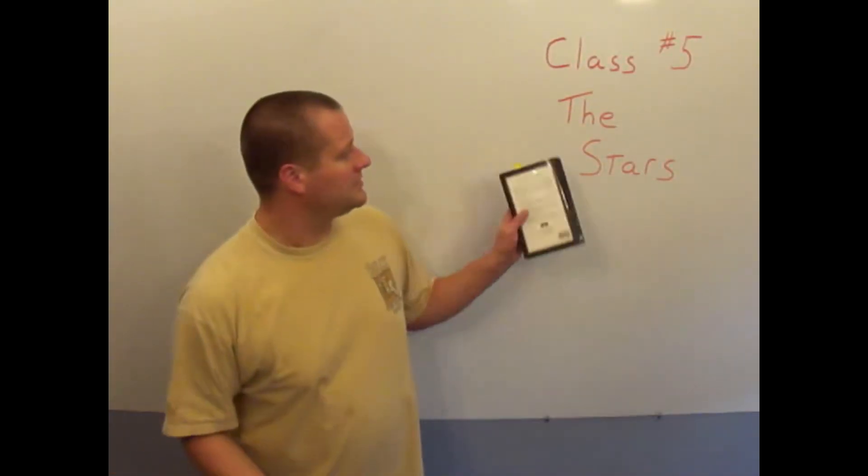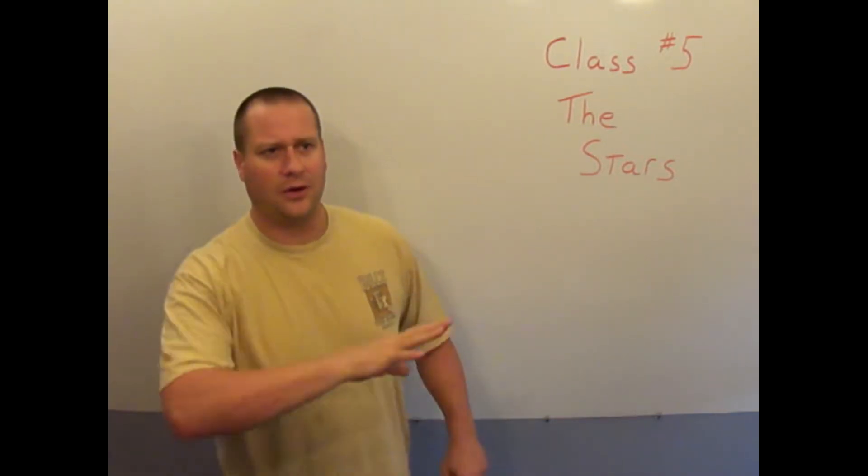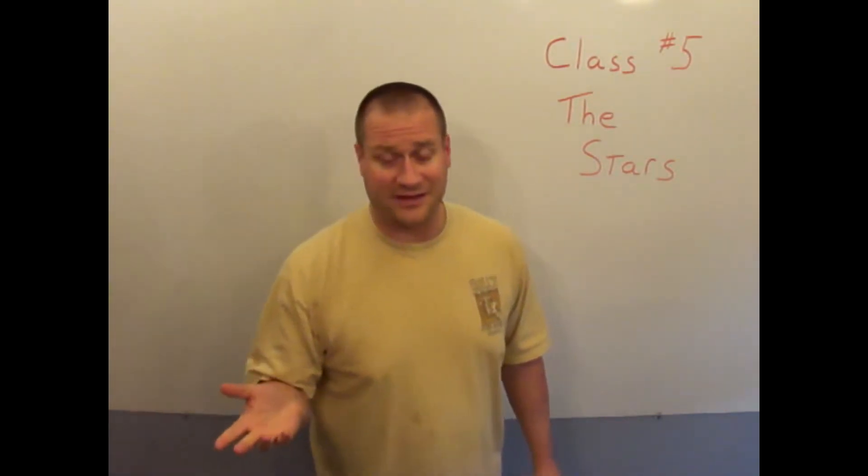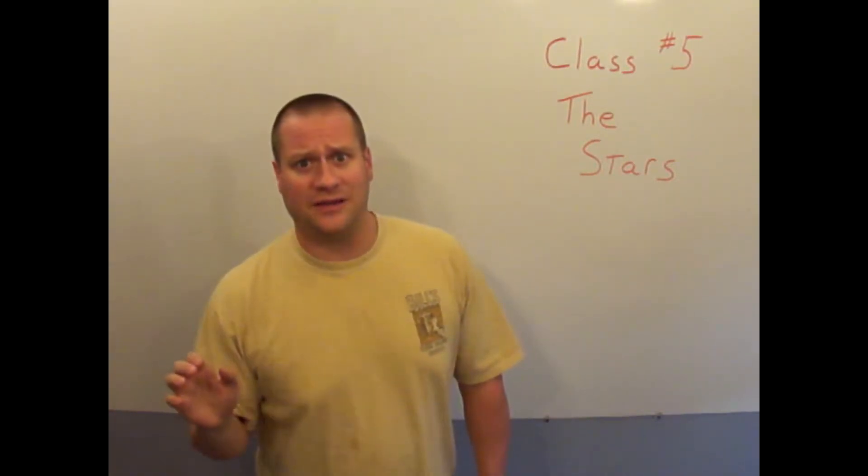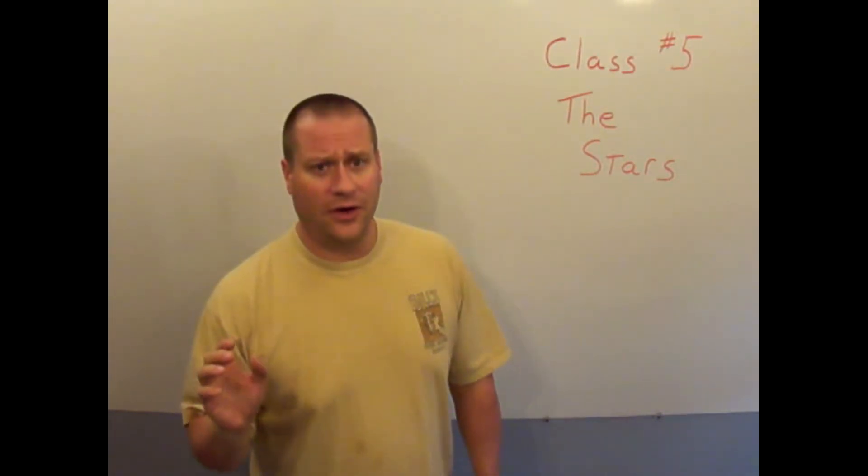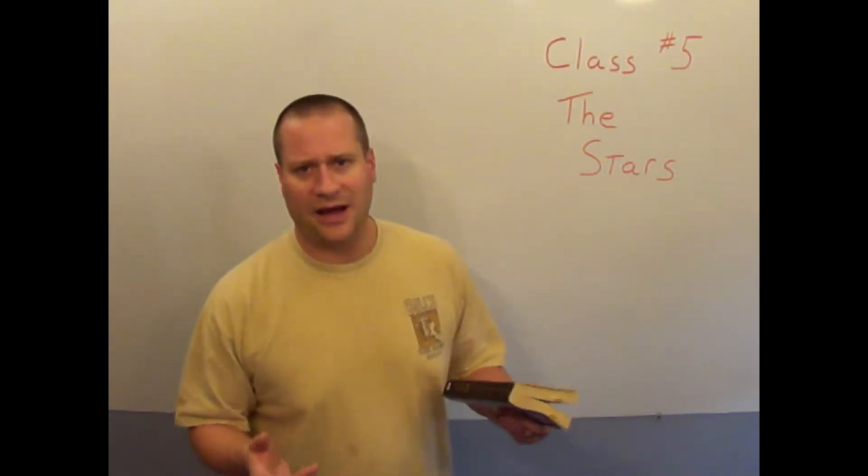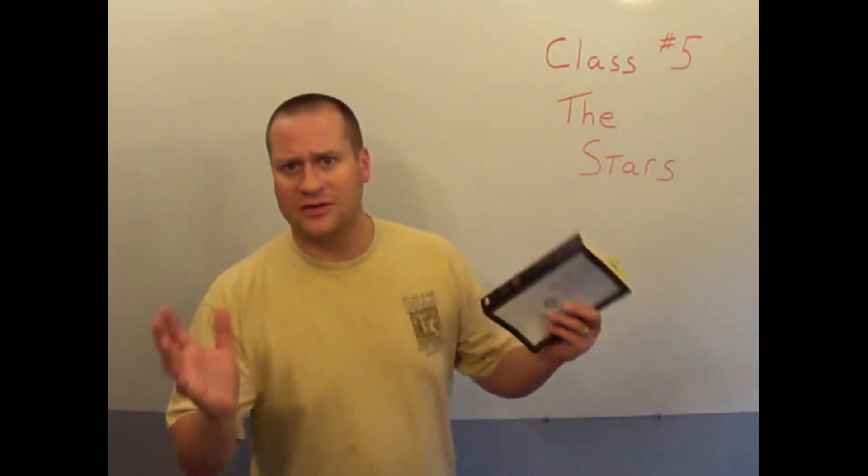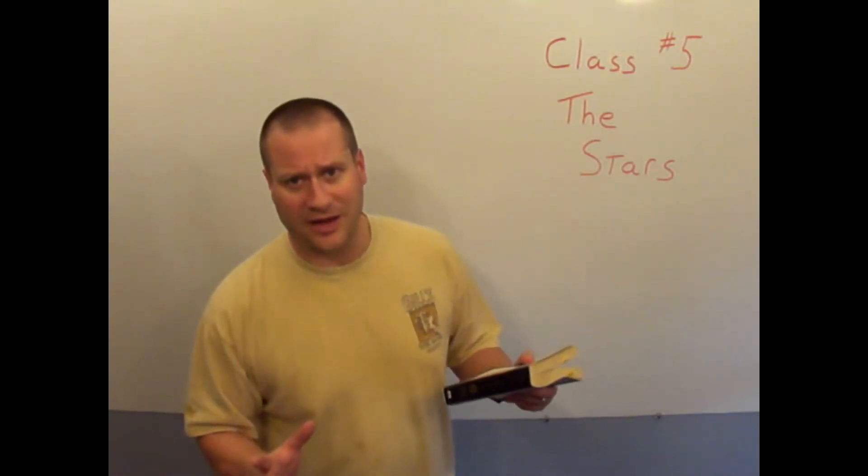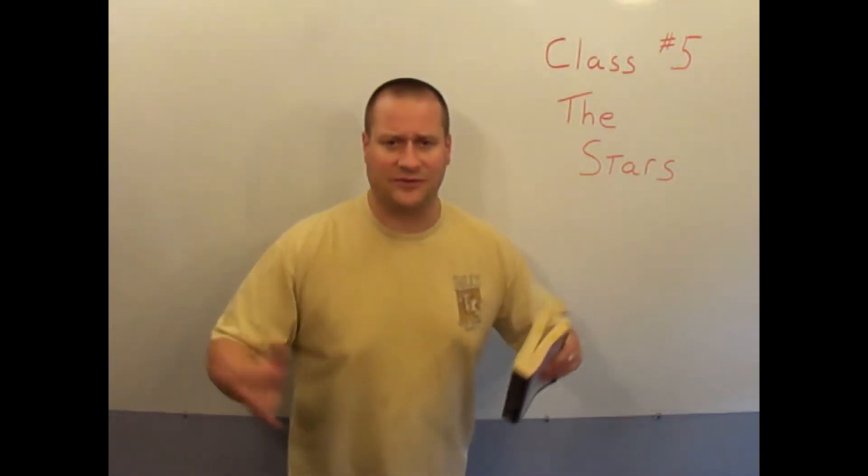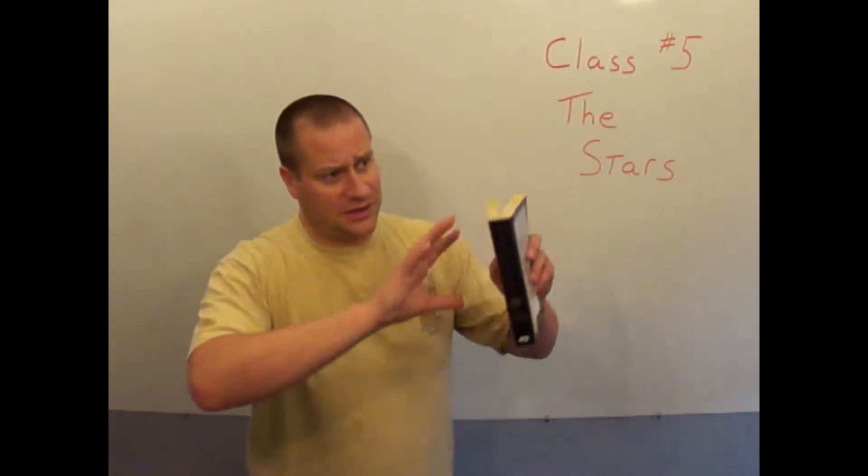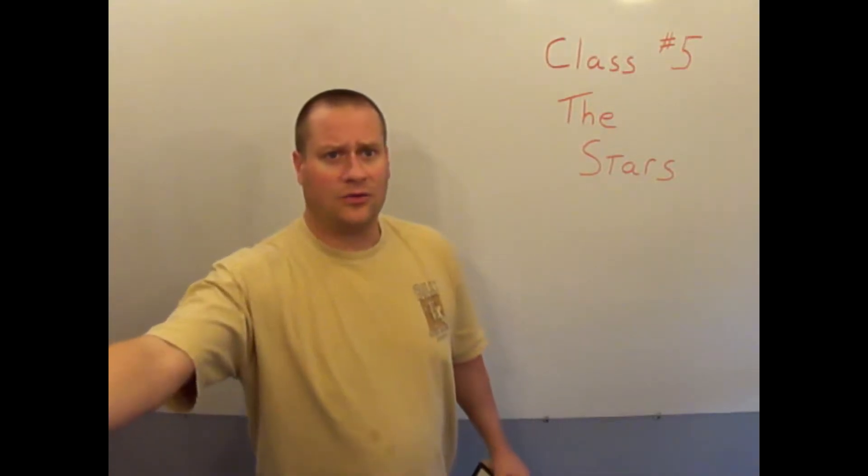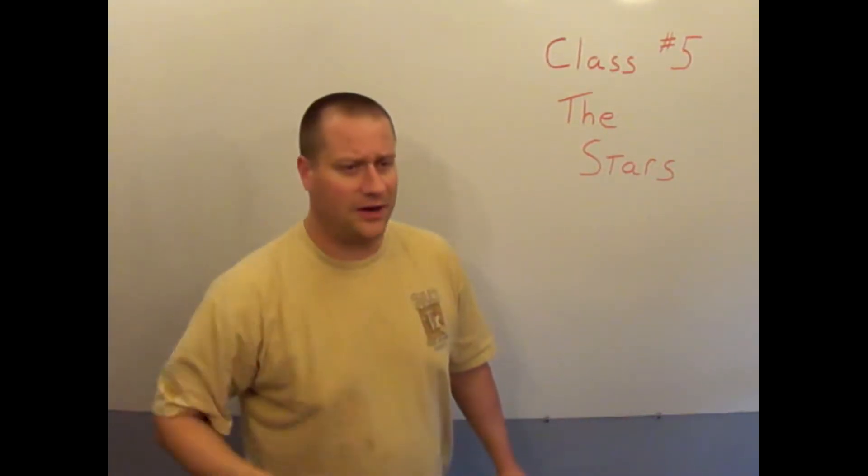Welcome to class number five where we're going to study the stars. So we know that there's planets out there. We know that planets can appear to be stars. But all the twinkling dots that you see in the black night sky that aren't planets are stars. And stars are essentially like our sun. They're balls of fire burning brightly, consuming energy. We'll see later that there are lots of different sizes and colors and things like that. But there are essentially little suns out there shining their light across the universe to reach planet Earth.